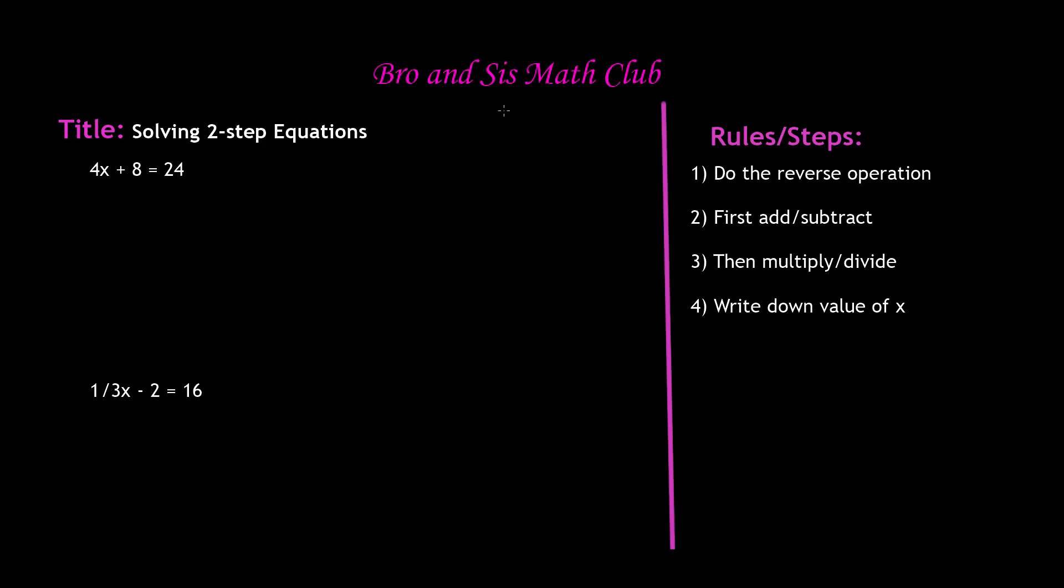So this is a pretty basic topic. Here we have four rules and steps. Number one says do the reverse operation. So we're going to take a look at our equations, and if it's being added, we're going to subtract. If there's subtraction, we'll add. If there's multiplication, we'll divide. If there's division, we'll multiply. So basically, we're just doing the opposite of the operation.